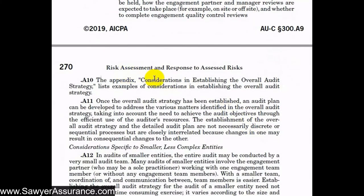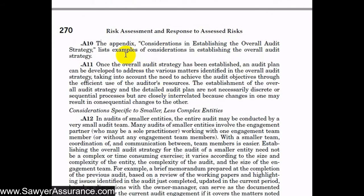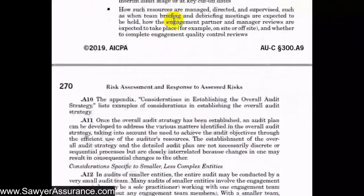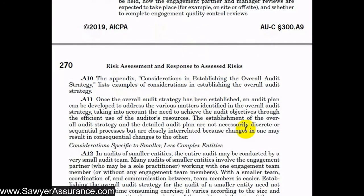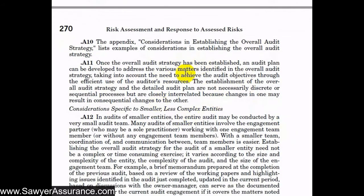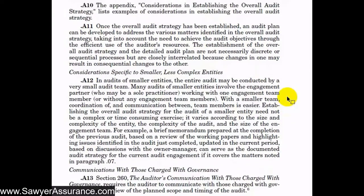In the appendix they have a document for considerations in establishing the overall audit strategy, which lists examples we could use to develop our strategy. After developing the audit strategy, we now have a basis to establish the audit plan — the trees of the engagement. These plans and strategies aren't static; they're dynamic and would change as the engagement goes on, and they're not necessarily discrete or sequential processes. If our audit plan changes, we might have to consider changing the audit strategy to match, and vice versa — they need to be aligned at all times.